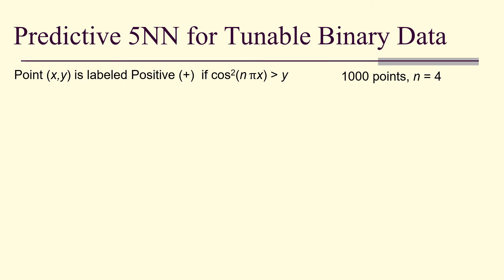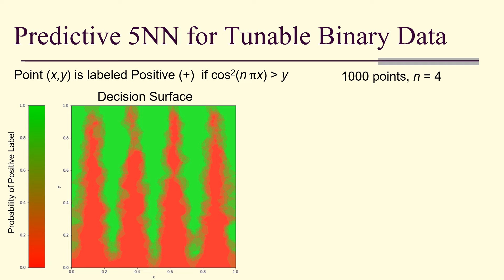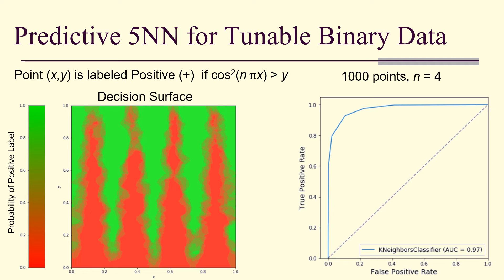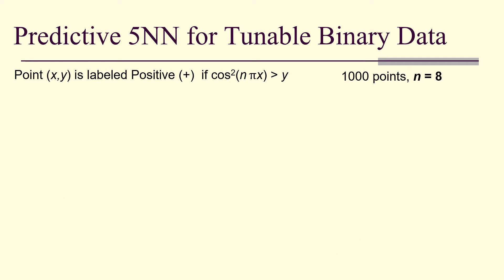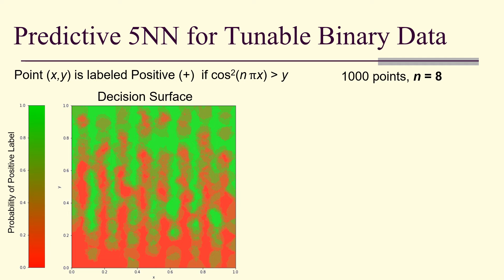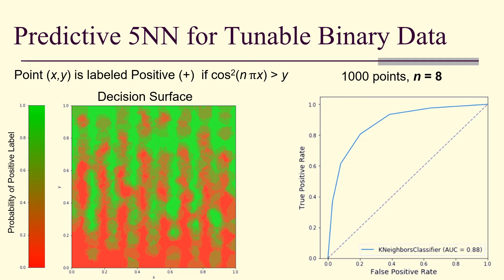Looking at examples with 1,000 points: with n=4 and a 5-nearest-neighbor classifier on tunable binary data — where a point (x, y) is labeled positive if cos²(nπx) > y — the decision surface shows clear structure, and the ROC curve achieves 97% area under the curve with a best threshold of 0.6. Moving to n=8, the decision surface loses vertical detail, and the ROC area under the curve drops to 0.88, though the threshold remains at 0.6.